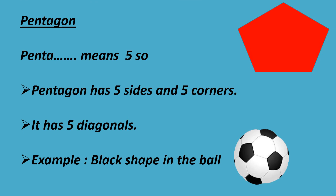Penta means five. So, pentagon has five sides and five corners. It has five diagonals. Example: black shape in the ball.